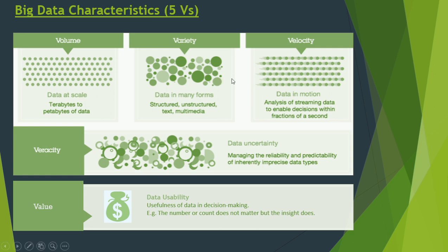These were called the three V's of big data earlier, but now more V's are evolving. Veracity refers to data uncertainty — whether data has null values, and managing the reliability and predictability of inherently imprecise data types. Value is the fifth V — it refers to data usability, whether the data is useful for decision-making, where the count or number does not matter but the insight does, and where we can get visualizations from data to make important decisions.